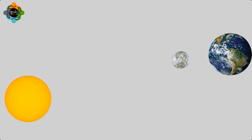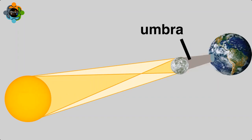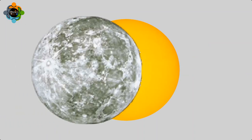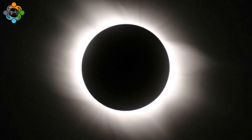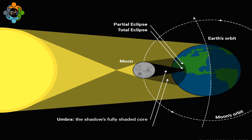The physics behind a solar eclipse is truly a marvel of nature. When the moon blocks out the sunlight, it creates a shadow on earth known as the umbra. Within the umbra, the sunlight is completely blocked, creating a temporary darkness on earth.